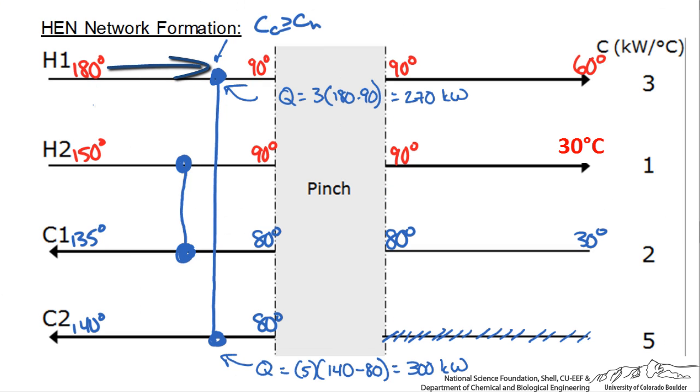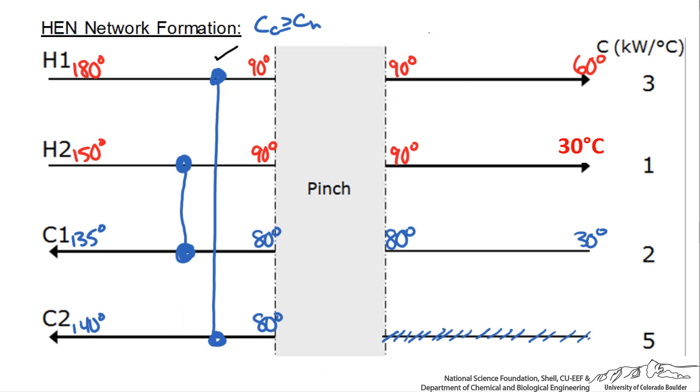At this node we could decrease the temperature from 180 all the way to 90, but we cannot increase the cold stream from 80 to 140. We could check mark that node knowing we could go from 180 degrees and cool it to 90 degrees. But for the other node we know that this load is 270 kilowatts, which means we could raise the temperature from 80 degrees using Q equals 270 divided by 5 and the temperature difference, x minus 80.